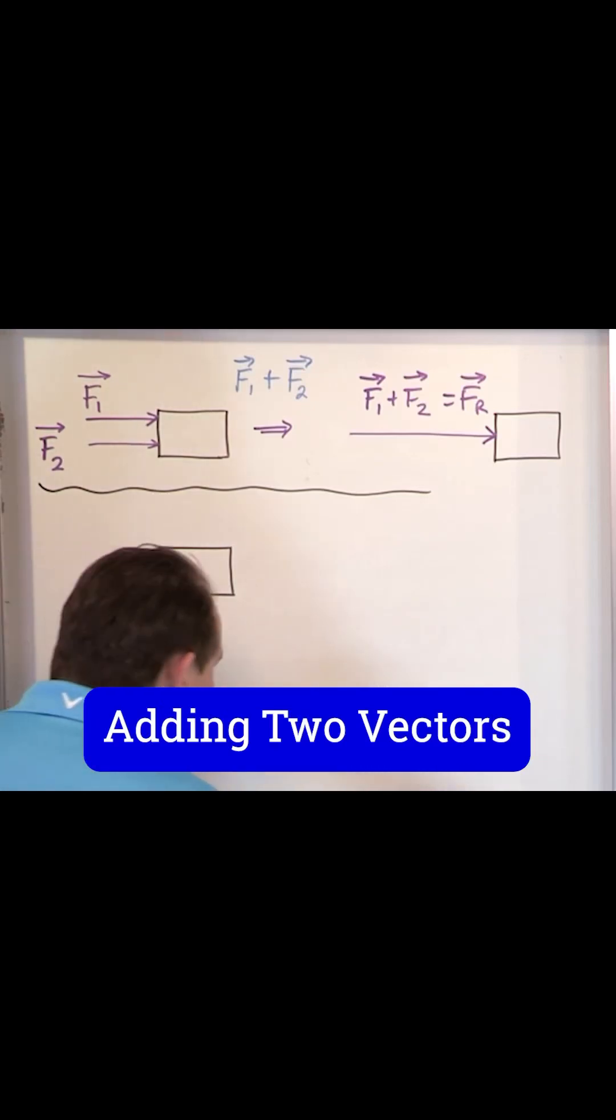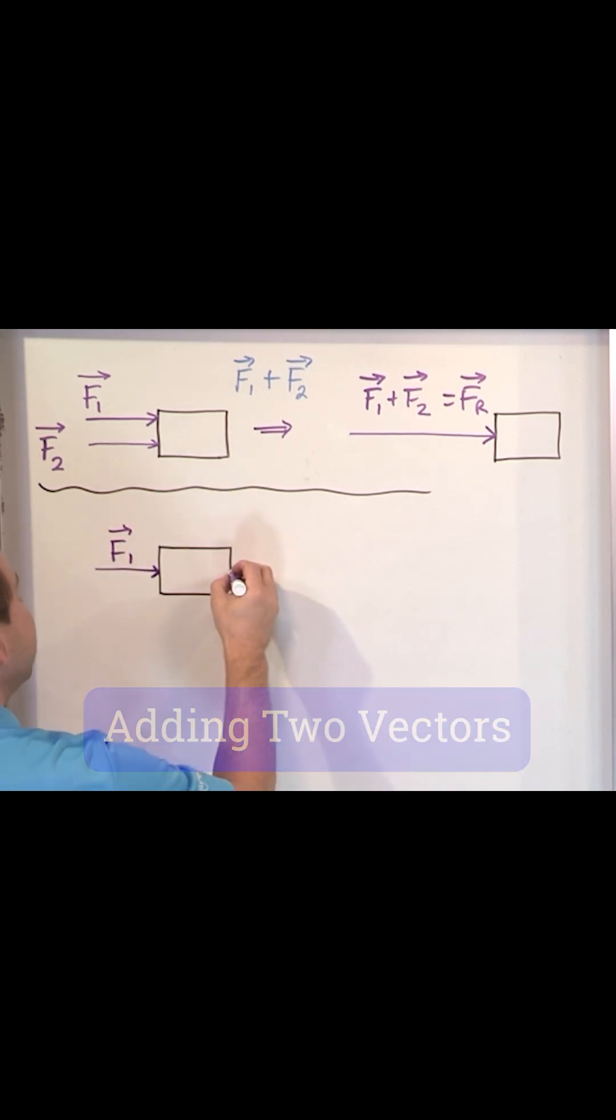Let's say person number one is pushing on this box, exact same force as before, so we'll call it F1, but then we have another person on the other side of the box pushing but pushing against you. This is F2.